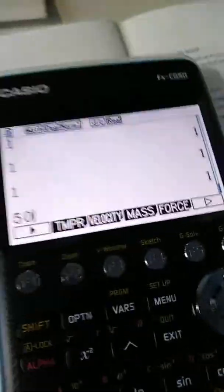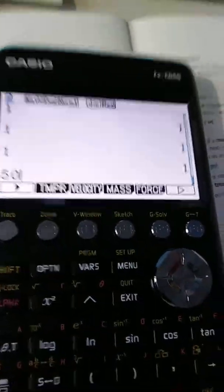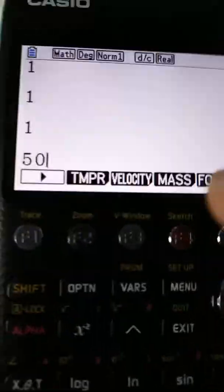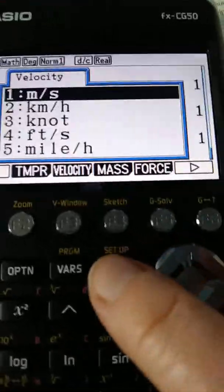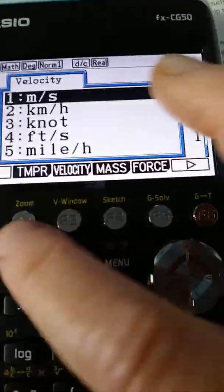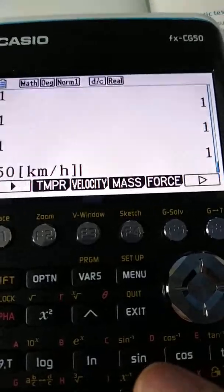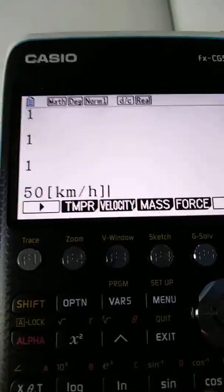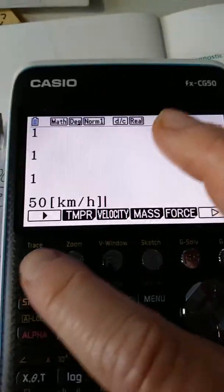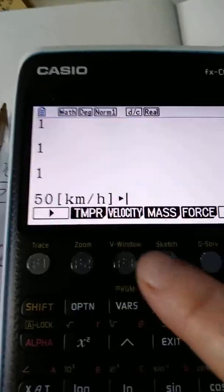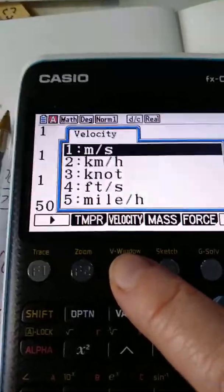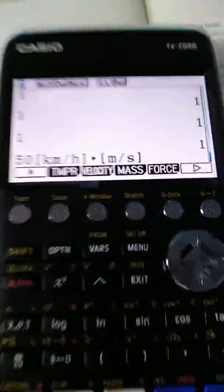No, it's not F2, it's just number two. Put number two, it comes up with that, then you need to press the convert button. The convert button is the F1 button, and then we want to convert to, press velocity again, and we want meters per second. So we press number one and then press just the EXE button. And hey presto, there it is.